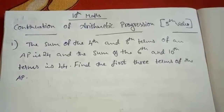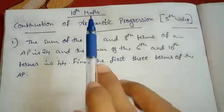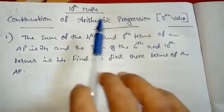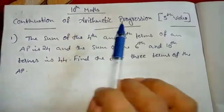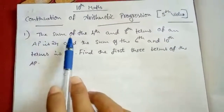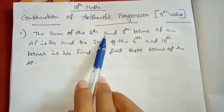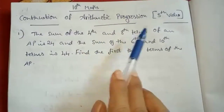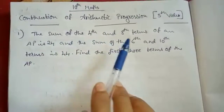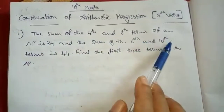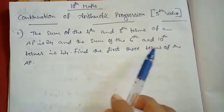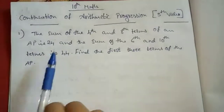Good morning students. Today I am going to teach 10th maths arithmetic progression, continuation of a previous video. So first question: the sum of 4th and 8th terms of an AP is 24 and the sum of 6th and 10th terms is 44. Find the first 3 terms of AP.